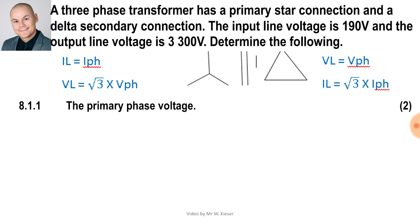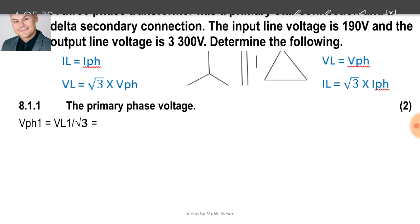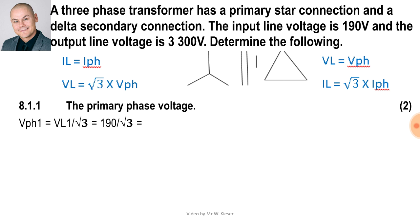Question one: calculate the primary phase voltage. The primary side is star connected, so to calculate V phase one it's going to be VL1 over square root three. VL1 is 190 volts divided by square root three, and that gives us V phase one = 109.697 volts.